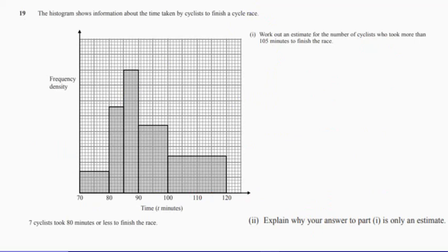Question 19 says work out an estimate for the number of cyclists who took more than 105 minutes to finish the race.